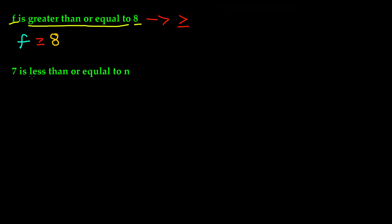Our last example: 7 is less than or equal to the variable n. First we have the number 7, and it's telling us it is less than or equal to the variable n, which is an unknown value. So we bring down our number 7 first, and then less than or equal to.